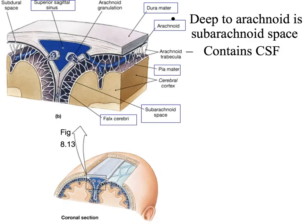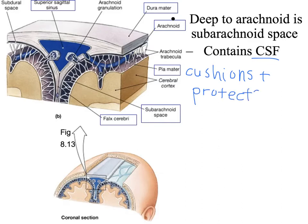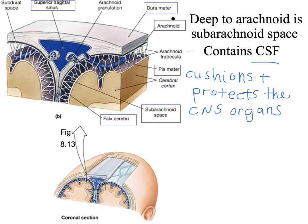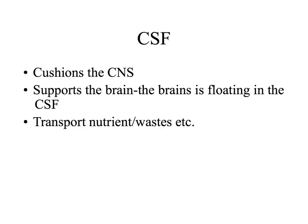The CSF has a key function: it cushions and protects the organs of the CNS. The brain floats in CSF, making it a great shock absorber. It also helps transport nutrients and waste.